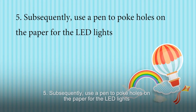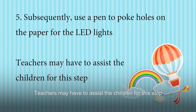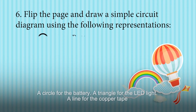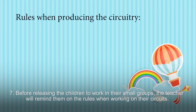Subsequently, use a pen to poke holes on the paper for the LED lights — teachers may have to assist the children for this step. Then, flip the page and draw a simple circuit diagram using the following representations: a circle for the battery, a triangle for the LED light, and a line for the copper tape.